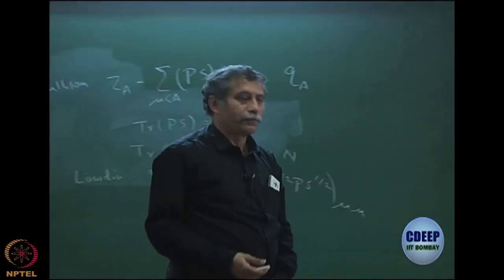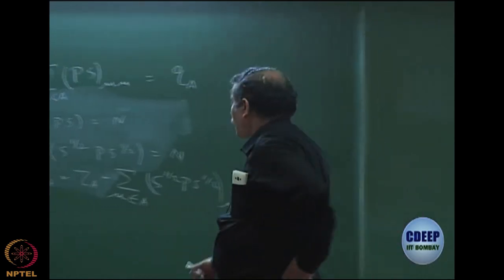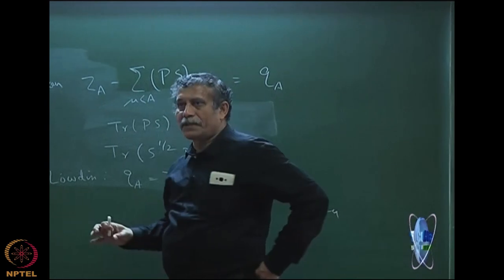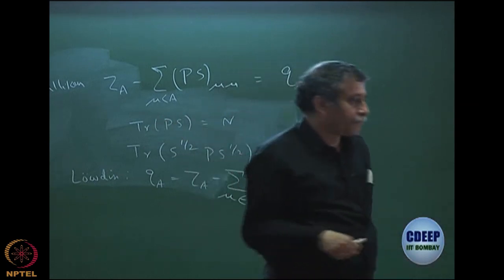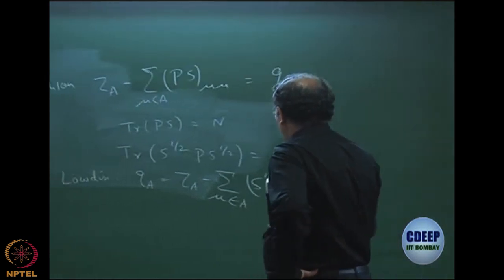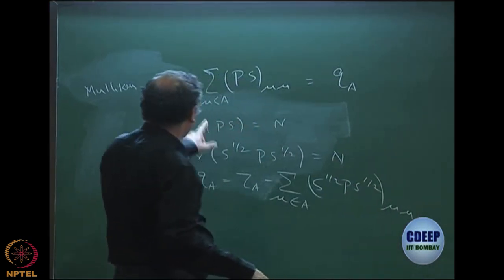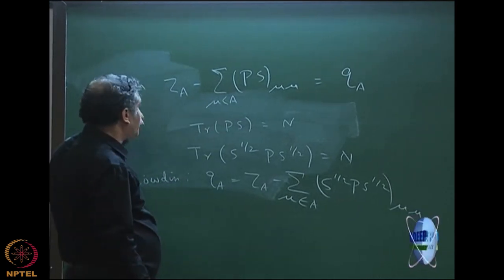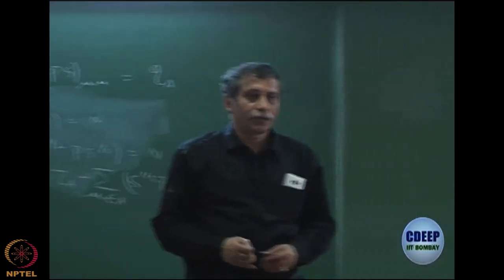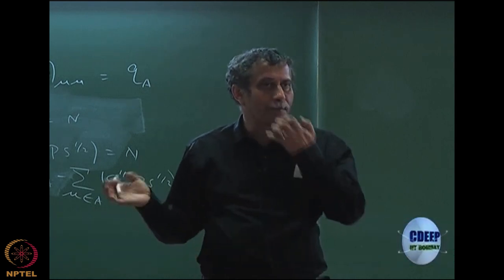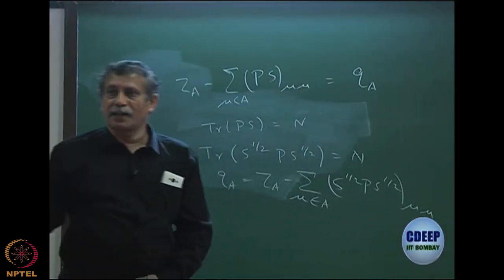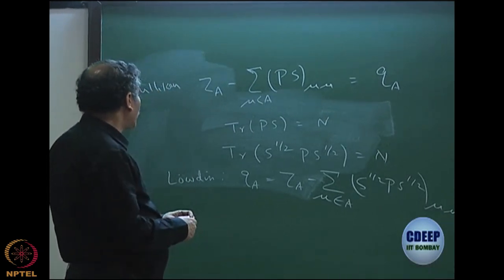It is possible to find many such population analyses because I can construct the trace of many such matrices that are invariant by splitting S and P in many ways. However, the number summed over a particular atom is not invariant — we get different charge densities in different partitioning schemes. That is why there is Mulliken population, Löwdin population, Hirschfeld population, and so on. For this course we will restrict to Mulliken and Löwdin only.